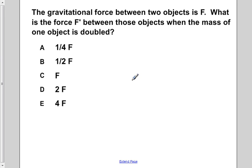The gravitational force between two objects is F. What is the force F prime between those objects when the mass of one object is doubled?